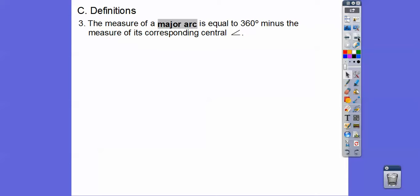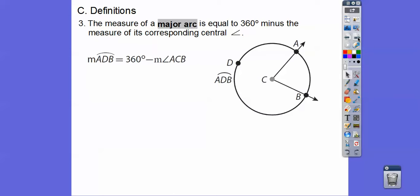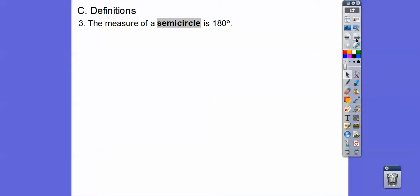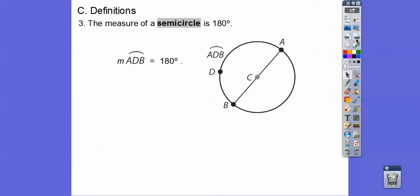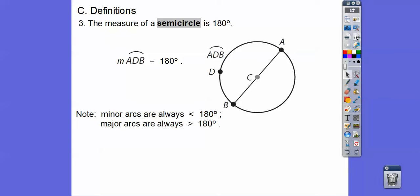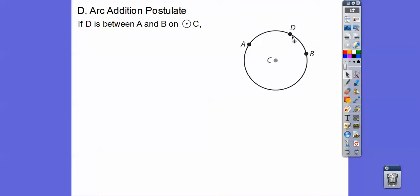The measure of a major arc is 360 degrees minus the measure of the corresponding central angle. So arc ADB equals 360 minus this central angle, or 360 minus the minor arc. A whole circle is 360 degrees. The measure of a semicircle is 180 degrees. Minor arcs are always less than 180; major arcs are always greater than 180. The arc addition postulate says that if a point lies between two points on a circle, the two smaller arcs add up to the whole arc.